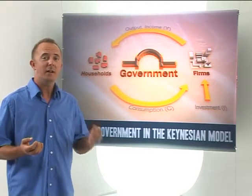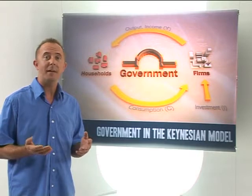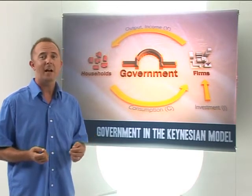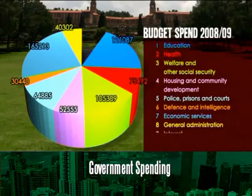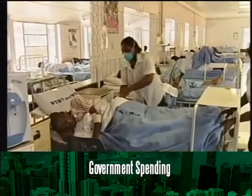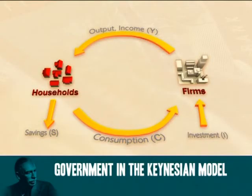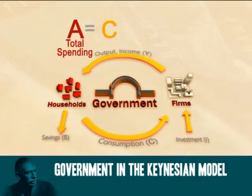We'll start by using our circular flow diagram to demonstrate the impact of government spending on total spending, income, and output. The government, as we saw in the budget, spends on everything from roads and power stations to schools and health care. In our circular flow diagram, government spending must clearly be included as part of total spending in the economy. So our total spending equation is actually consumption spending plus investment spending plus government spending.